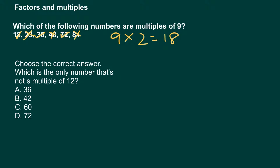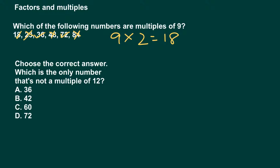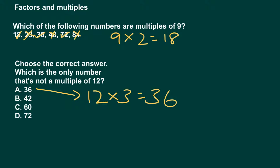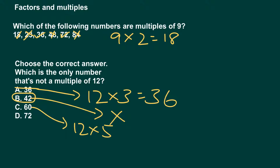Now let's look at the second question — it's multiple choice. Which is the only number that's not a multiple of twelve? Thirty-six, forty-two, sixty, or seventy-two? Twelve times three gives us thirty-six, so thirty-six is definitely a multiple. Twelve times one is twelve, twelve times two is twenty-four, twelve times three is thirty-six, twelve times four is forty-eight — so forty-two does not come up in the twelves times table, meaning our answer is forty-two. Twelve times five gives us sixty and twelve times six gives us seventy-two, so both are multiples.